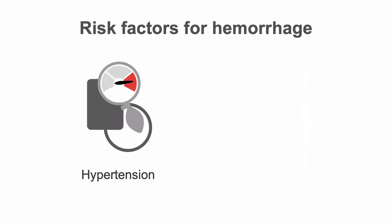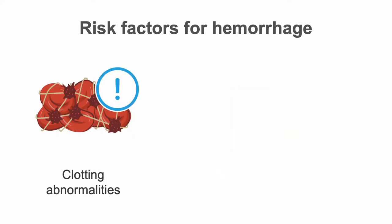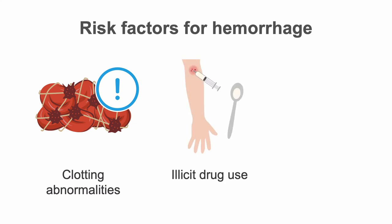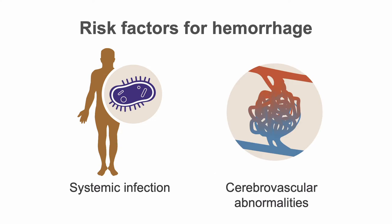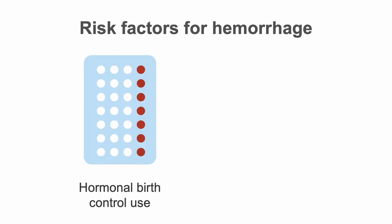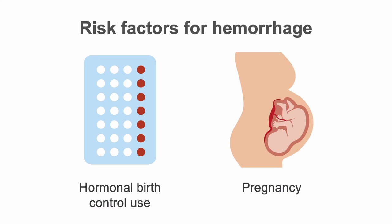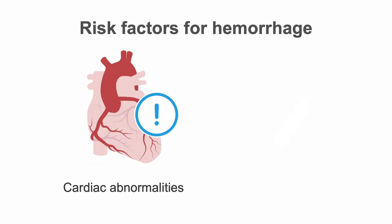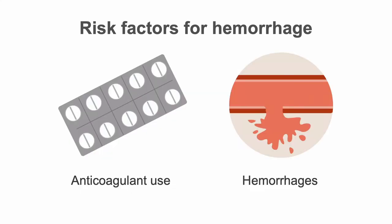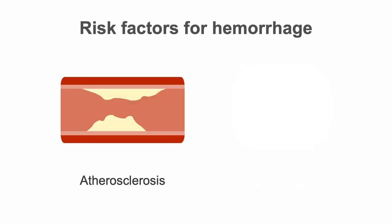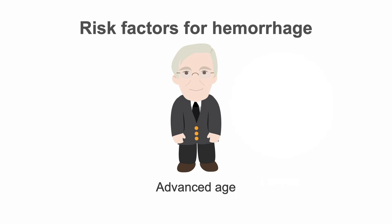Some things that increase the risk of spontaneous intracerebral hemorrhage include high blood pressure, heavy alcohol use, clotting abnormalities, illicit drug use such as cocaine and amphetamines, previous history of trauma, systemic infection, known cerebrovascular abnormalities such as arteriovenous malformations or aneurysms, hormonal birth control use, pregnancy, congenital cardiac abnormalities, atrial fibrillation, anticoagulant use, previous intracranial hemorrhages or surgeries, atherosclerosis, cancer, and advanced age.